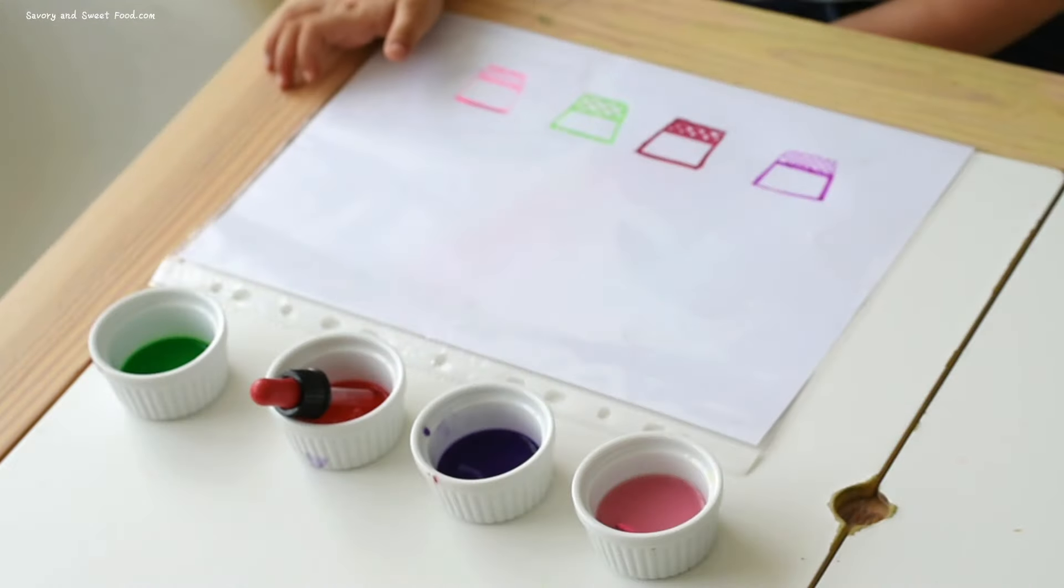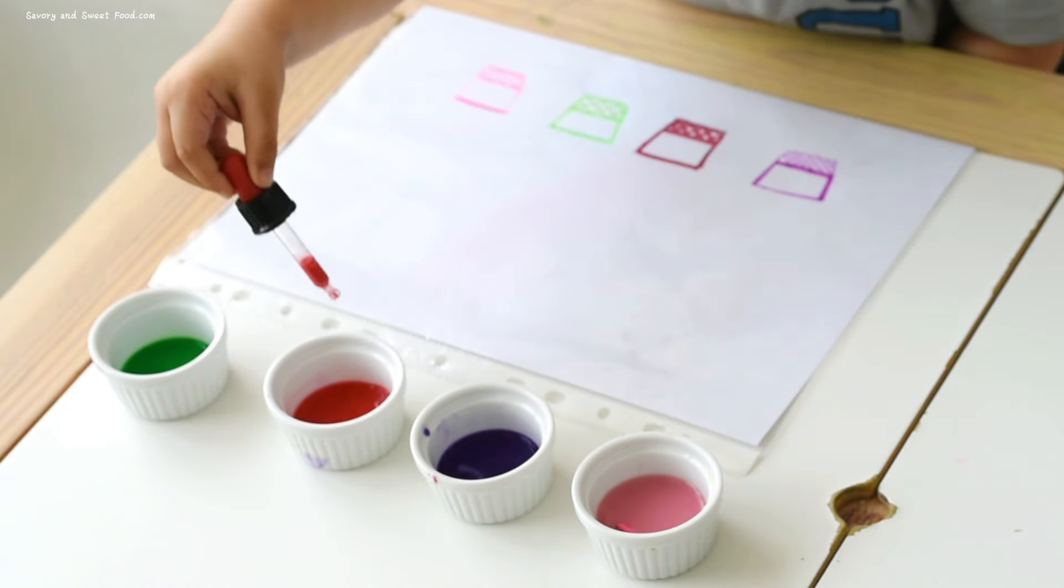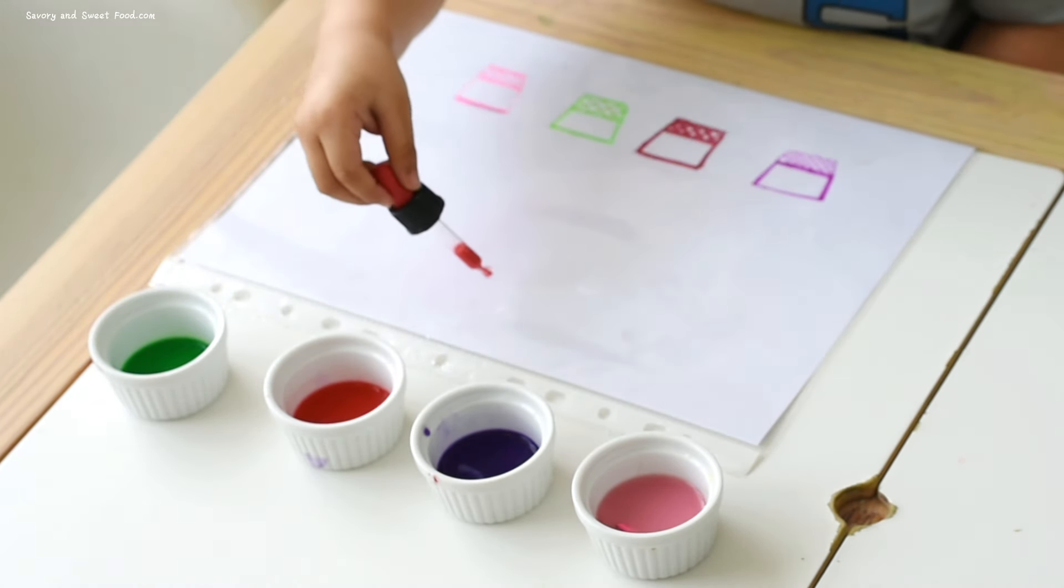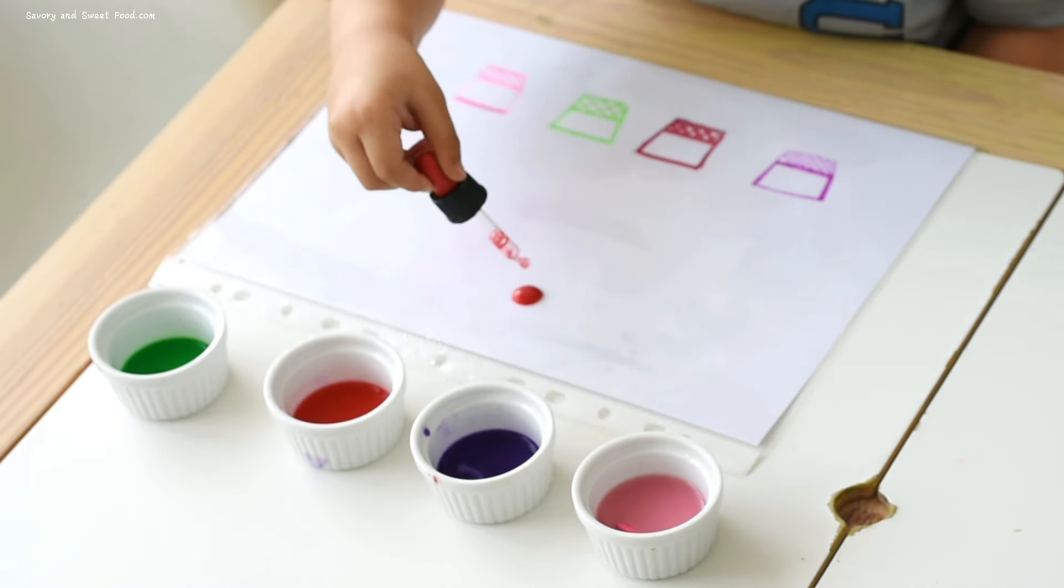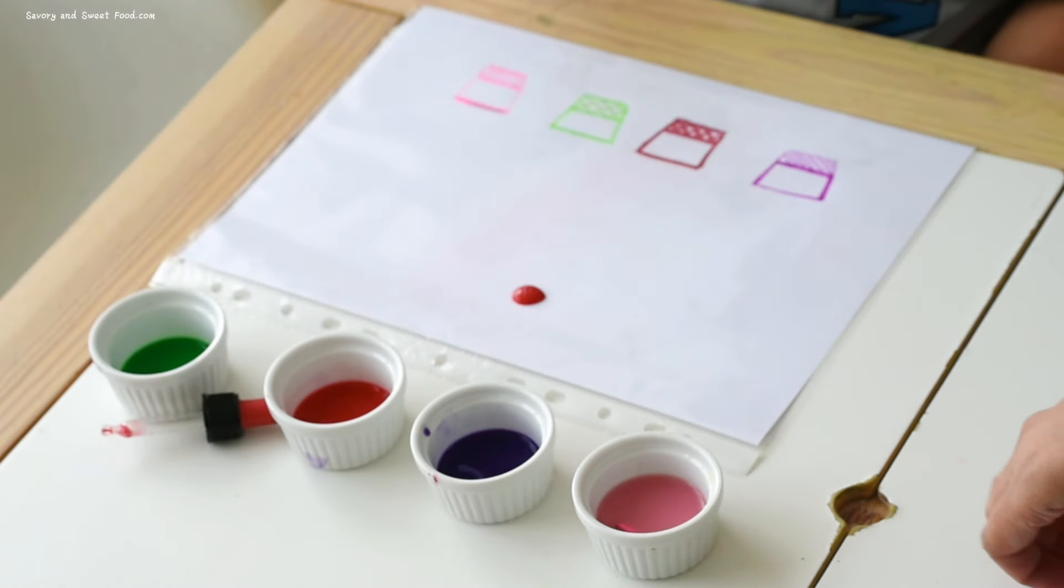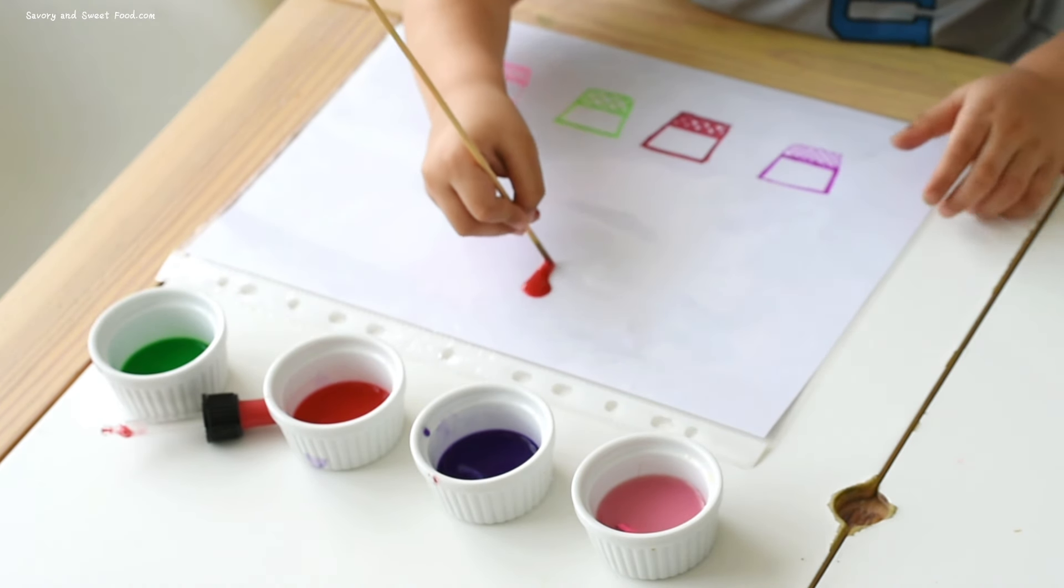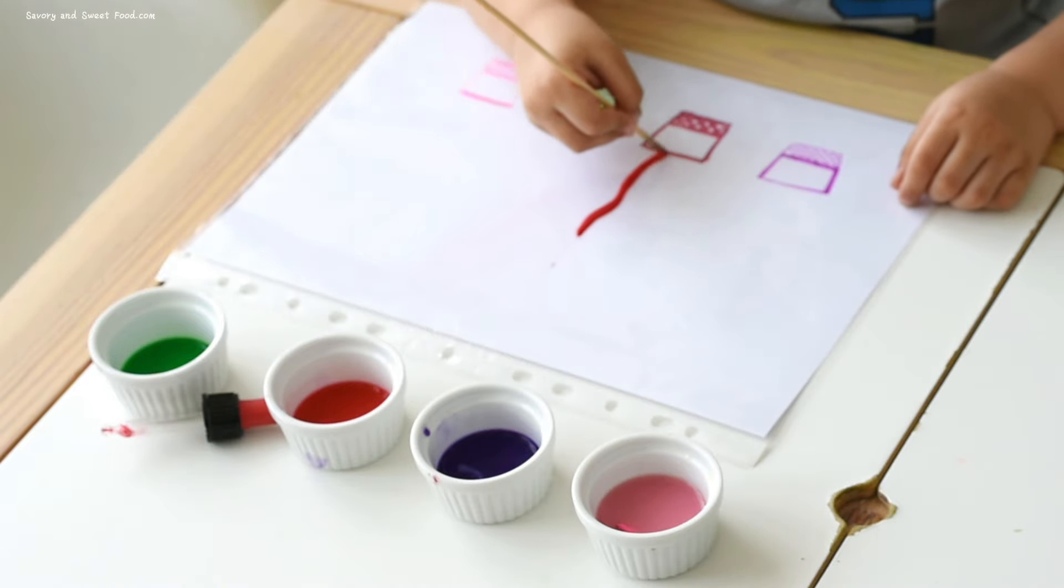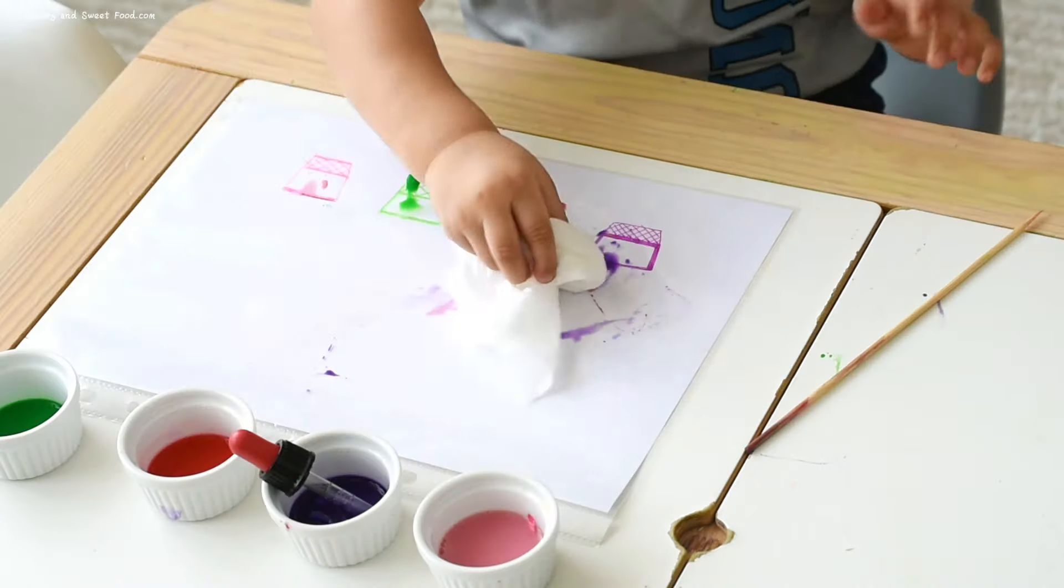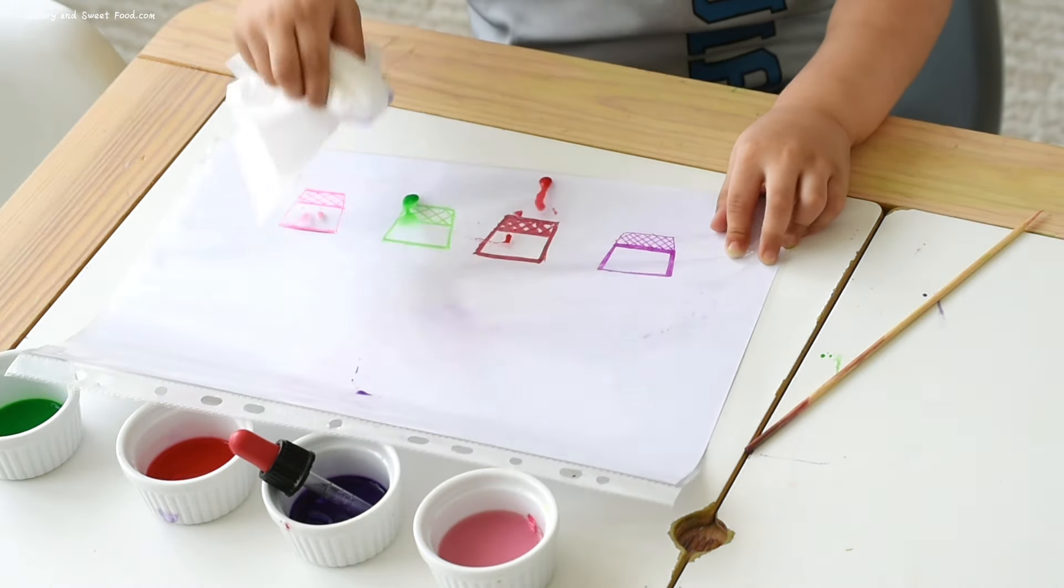Next up, we have the drop paint in the basket challenge. I drew colorful baskets on paper and placed that paper inside a plastic bag. You can understand how to do this activity by seeing the video clip. Since the paper is safely tucked inside the plastic file bag, a quick wipe with tissue paper easily takes care of any paint mess.